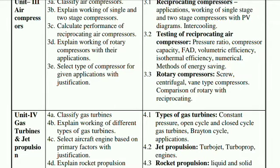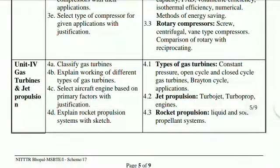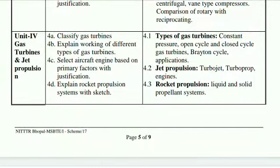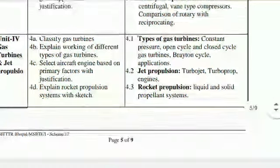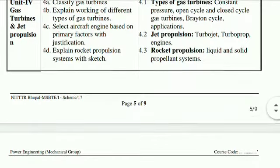The fourth unit is Gas Turbines and Jet Propulsion. The first point covers types of gas turbines: constant pressure, open cycle and closed cycle gas turbines, Brayton cycle and its applications. The second point is jet propulsion: turbo jet and turbo prop engines. The third point is rocket propulsion: liquid and solid propellant systems.